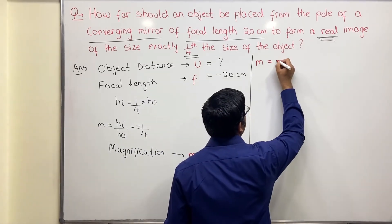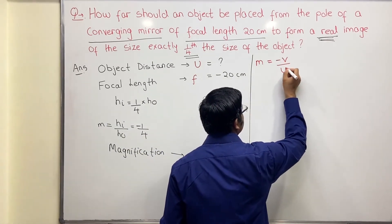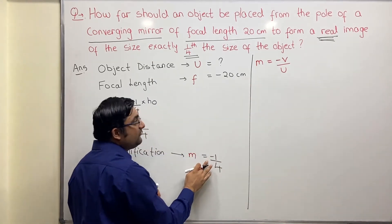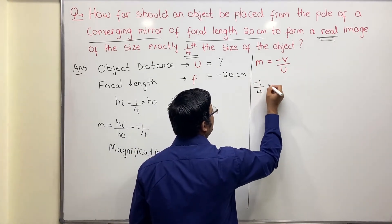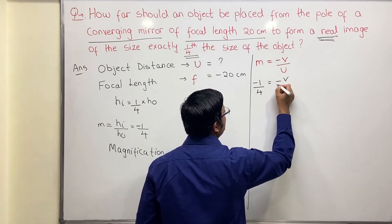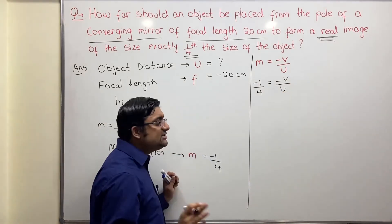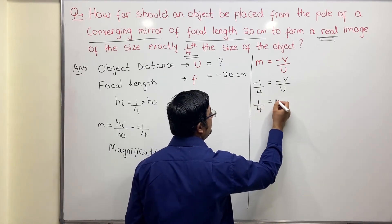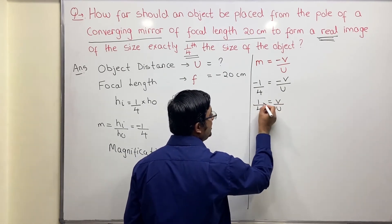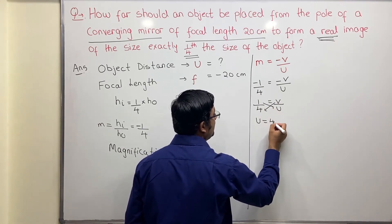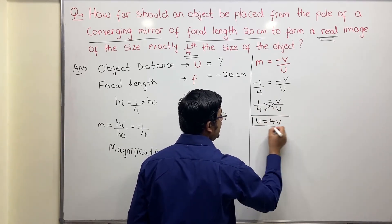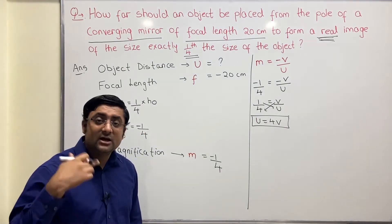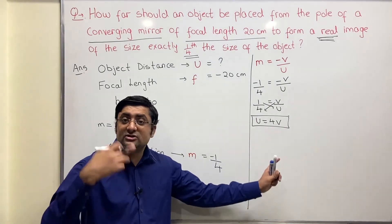Write down: magnification = -v/u. Substitute: minus one by four equals minus v by u. The two negatives cancel, giving one by four equals v by u. Cross multiply: u = 4v. Box this — this is one relation between u and v.